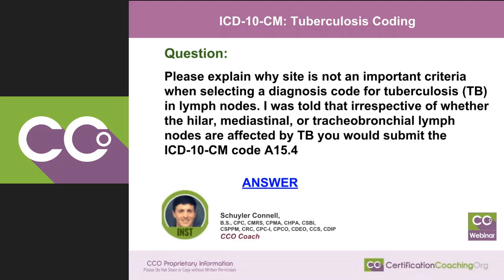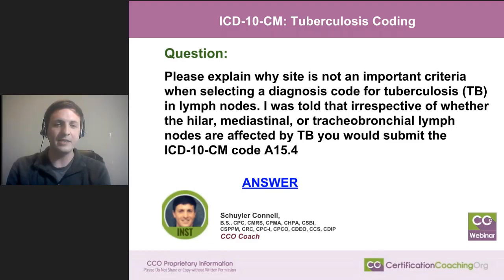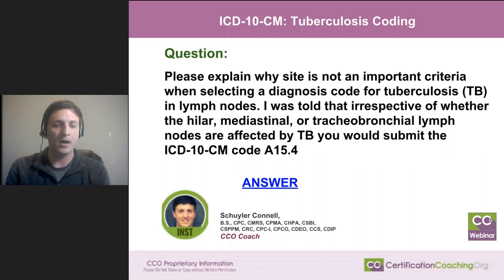A question came in asking: please explain why site is not an important criteria when selecting a diagnosis code for tuberculosis in lymph nodes. The question stated that irrespective of whether the hilar, mediastinal, or tracheobronchial lymph nodes are affected by TB, you would submit the ICD-10-CM code A15.4.